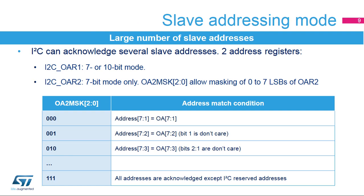The I2C slave can acknowledge several slave addresses, which are programmed into two registers. Own Address Register 1 can be programmed with a 7- or 10-bit address. Own Address Register 2 can be programmed with a 7-bit address, but the least significant bits of this address can be masked through the OA2MSK register in order to acknowledge multiple slave addresses. The two Own Address Registers can be enabled simultaneously.